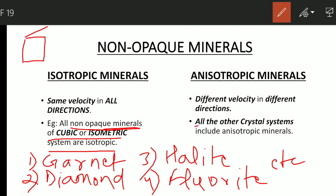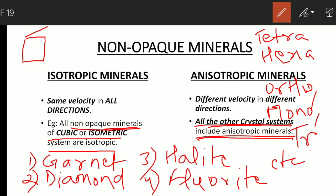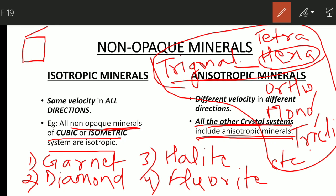For anisotropic minerals, all the other crystal systems — leaving out the cubic system — include anisotropic minerals. Like the tetragonal crystal system, hexagonal system, orthorhombic system, monoclinic system, and triclinic system. The hexagonal system also includes the trigonal system. If a mineral belongs to these crystal systems it has to be anisotropic in nature.